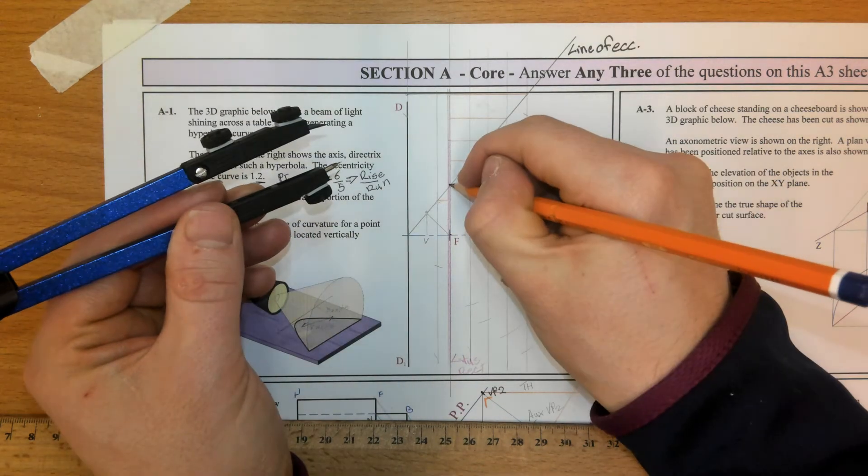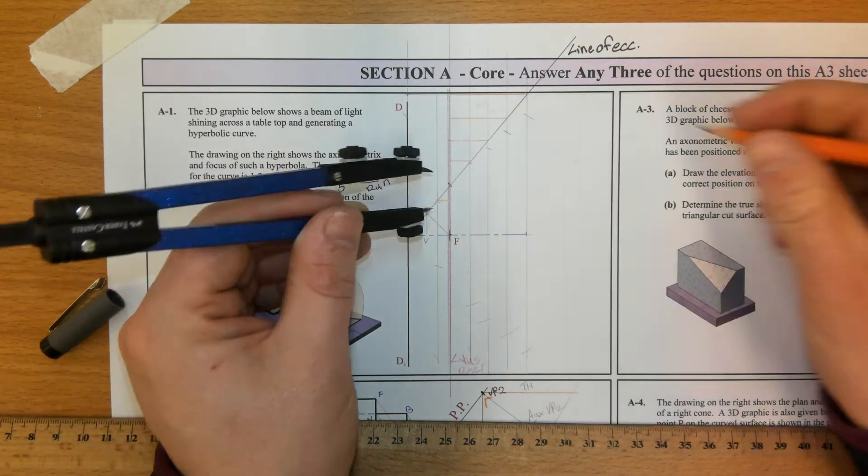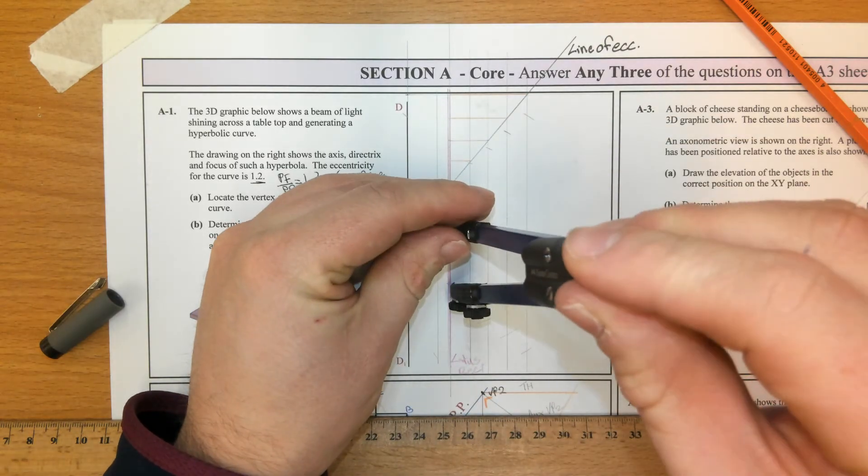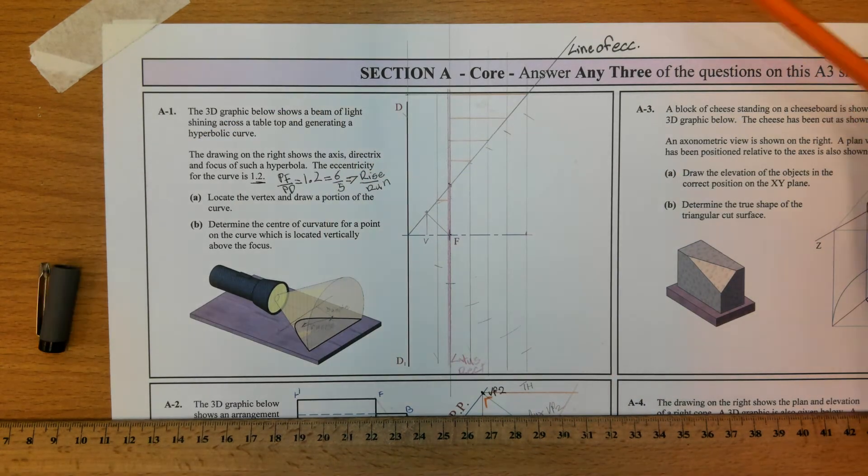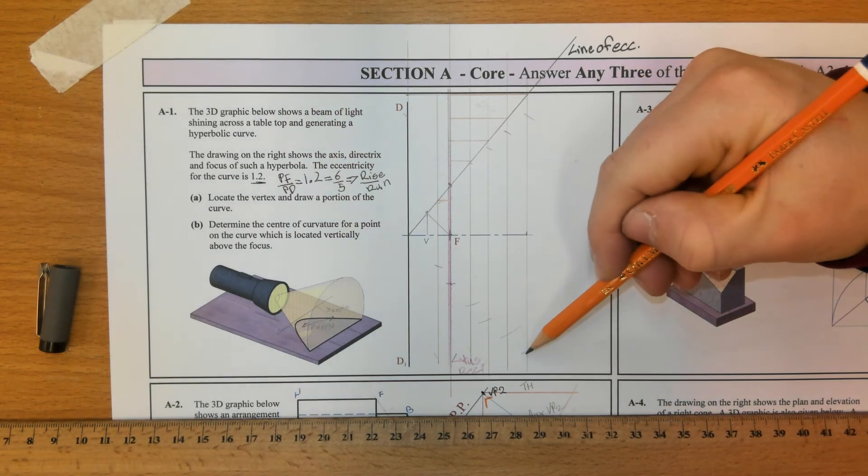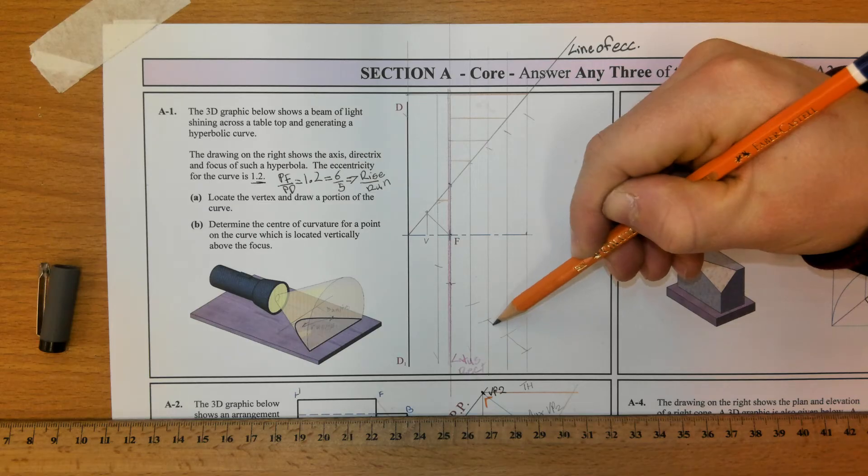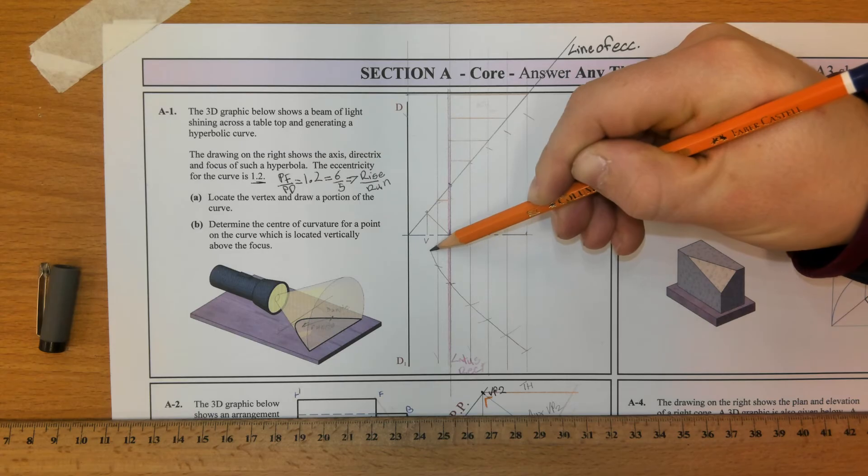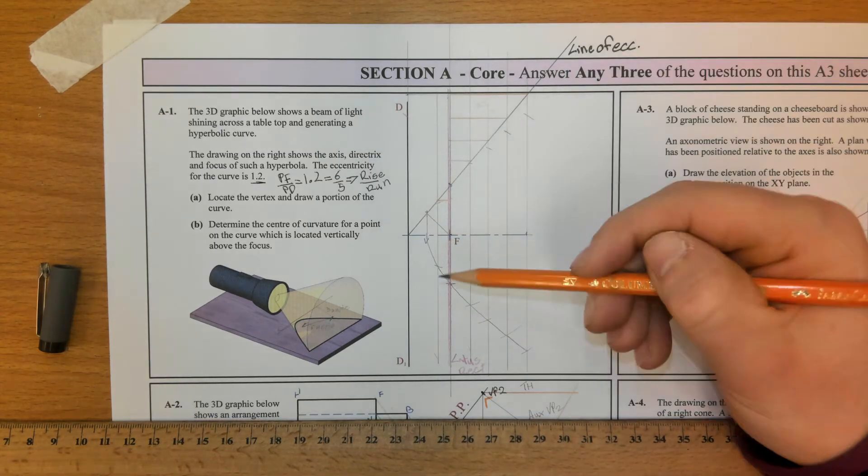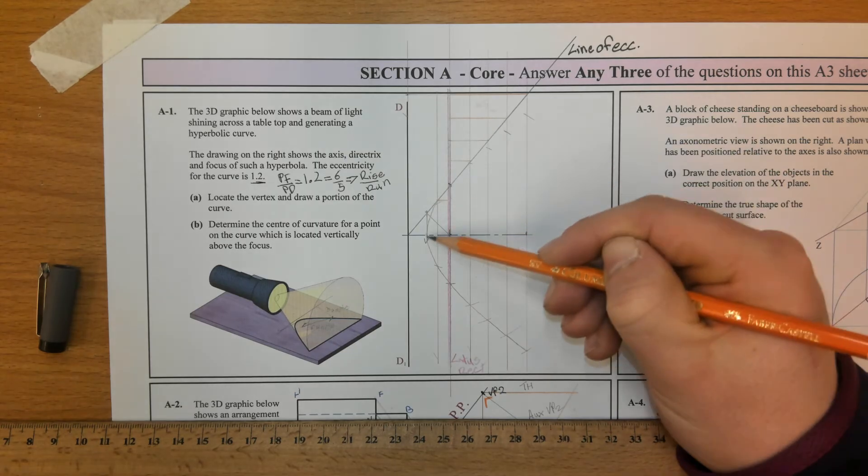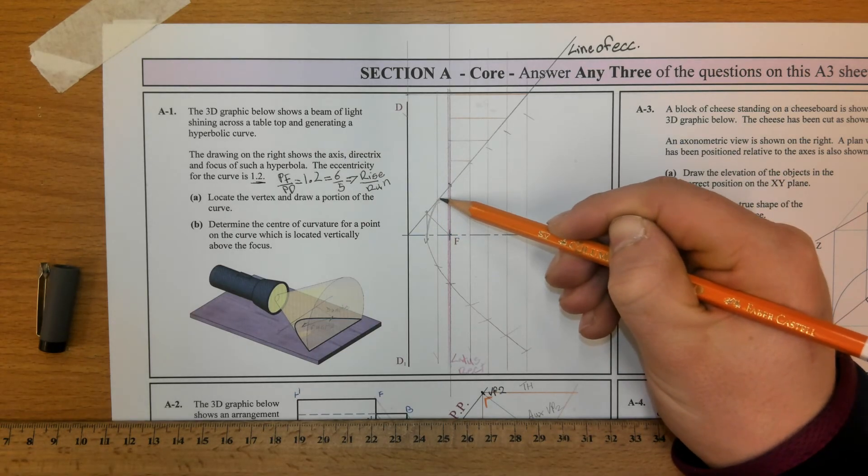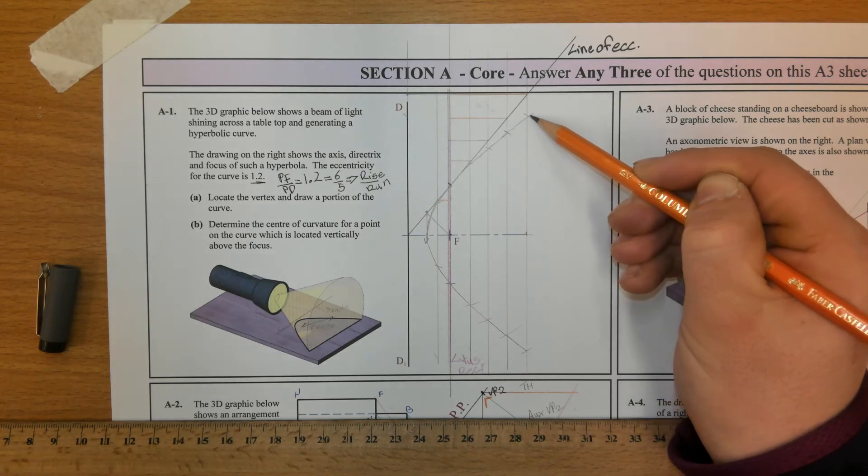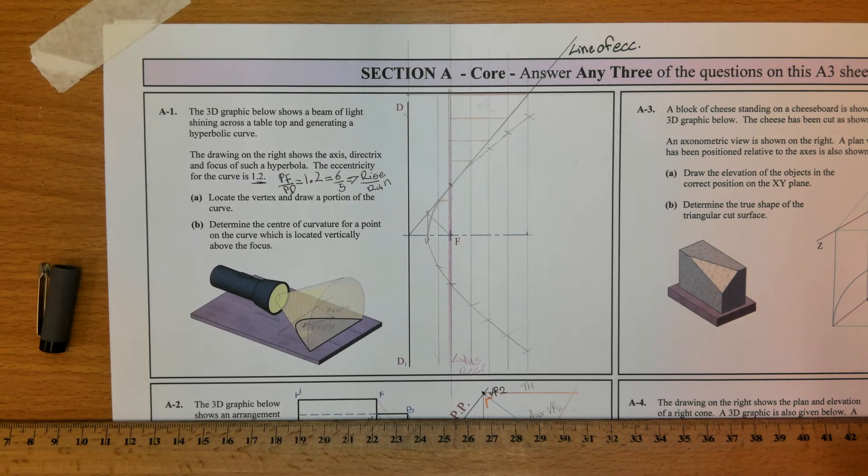Where the lattice rectum intersects the line of eccentricity is a point on the curve. I'm going to freehand sketch those in. So, there's a curve sketched in.